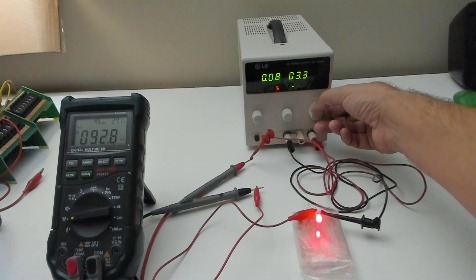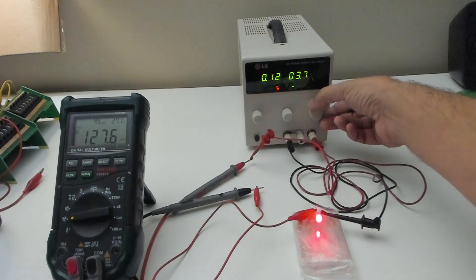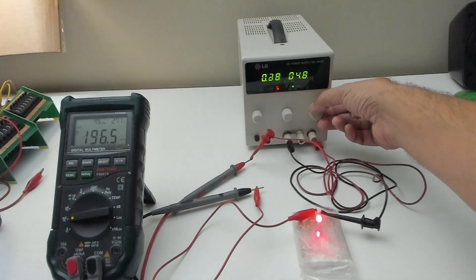3.3 we're at 100 at 3.5. Continue moving up 3.7. As I crank up the voltage a little bit more, we're at 5 volts and 200 milliamps, which is one watt of power across the LED.